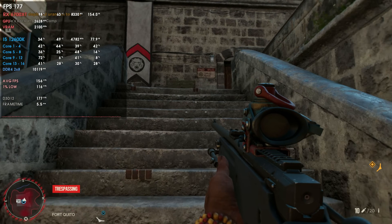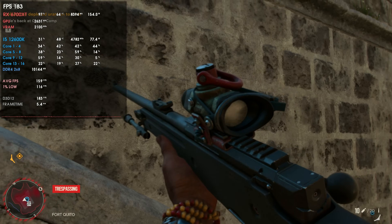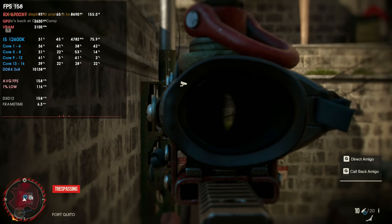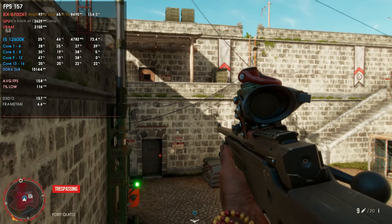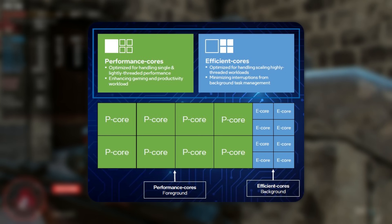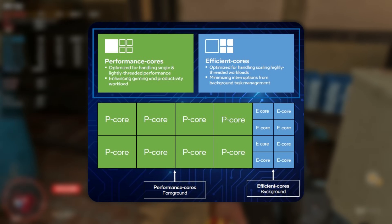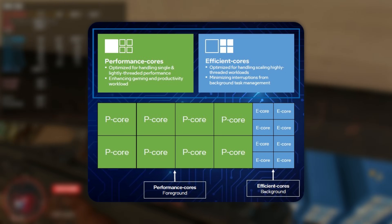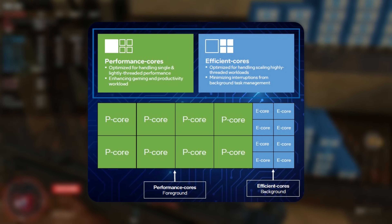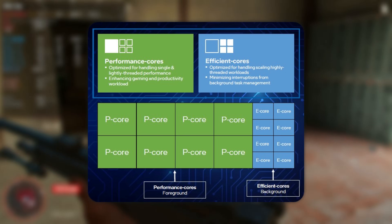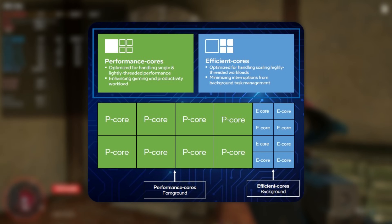The recent Intel processors like the 12th and 13th generation brought a new kind of layout that more or less follows the big-little layout we see on smartphones, featuring performance cores aimed at heavier tasks and efficiency cores which are lower-powered cores that focus on background tasks to save power or help the performance cores in multi-threading scenarios. And unlike what you may think, AMD also has so-called efficiency cores.